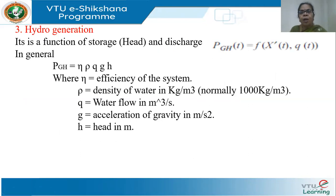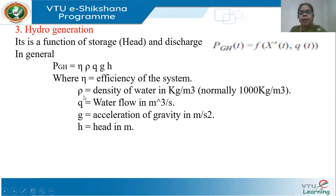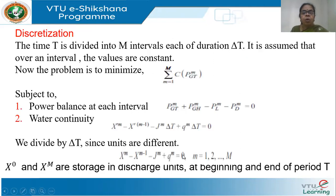The third constraint is on hydro generation. The power generated by a hydel plant is a function of storage and discharge. In general, PGH = η·ρ·q·g·h, where η is efficiency, ρ is the density of water (approximately 1000 kg/m³), q is water flow in m³/s, g is acceleration due to gravity, and h is the head of water available in meters.